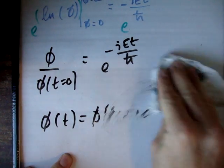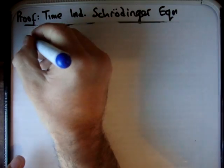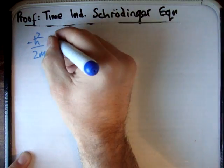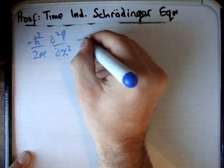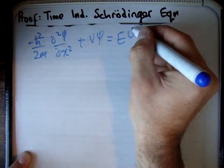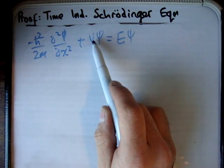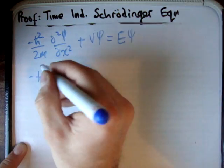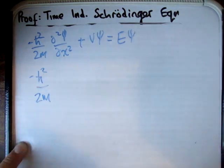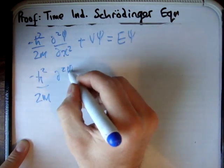Next I'm going to solve the second differential equation — the time-independent Schrödinger equation. We have negative h-bar squared over 2m times del squared psi del x squared, plus V times psi, equals the energy times psi. This is a second-order differential equation with constant coefficients, assuming we're in a constant potential. If you don't know how to do this, look at my videos on differential equations.